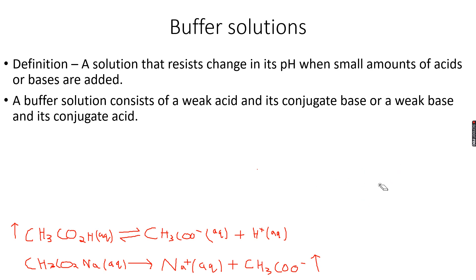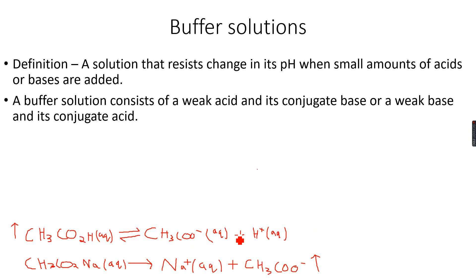This buffer acts when H+ ions are added — for example, when an acid is added. Since there is a large reserve supply of ethanoate ions, the H+ ions will react with the ethanoate ions to form ethanoic acid. The equilibrium for this reaction will shift to the left, because the added H+ ions react with ethanoate ions to regenerate ethanoic acid.